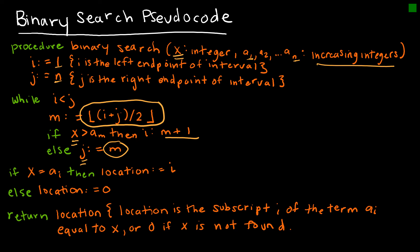So if x is equal to a sub i, then that is the location. If I didn't find the desired value of x, then my location is 0. And then the return, or the output, is the location. And all of this stuff in the middle is basically just telling us as a person what the location is.